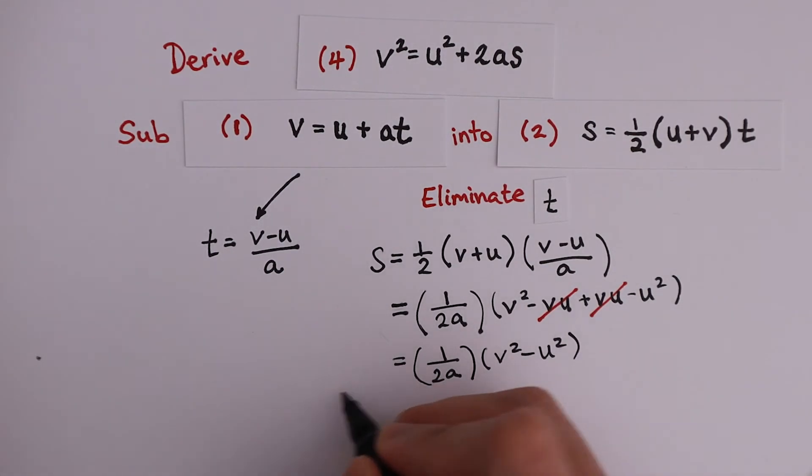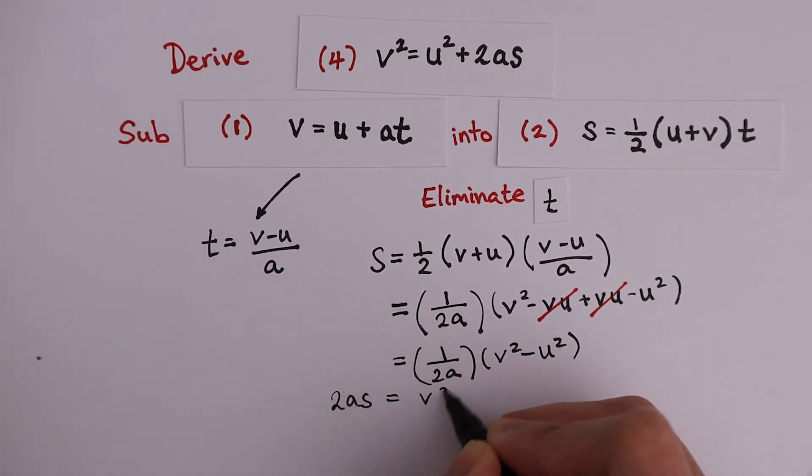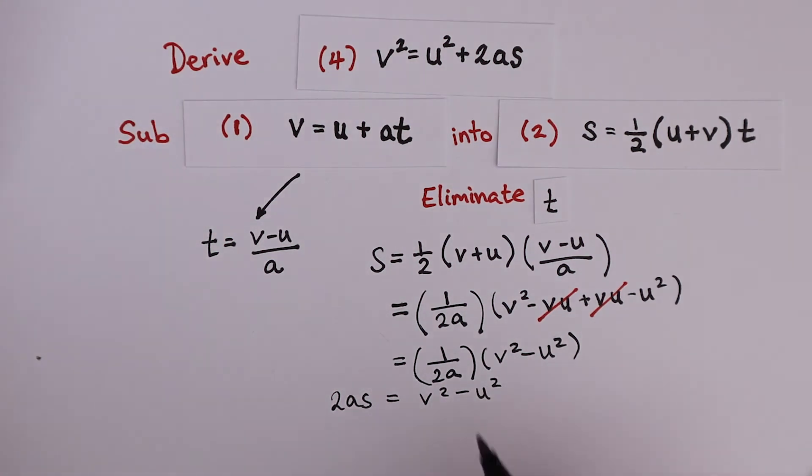Taking 2a to the other side, we get 2as is v squared minus u squared. And finally, bringing u squared to the other side of the equation, we get v squared is u squared plus 2as.